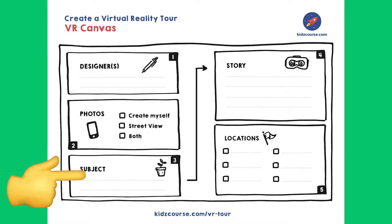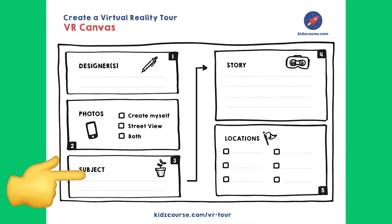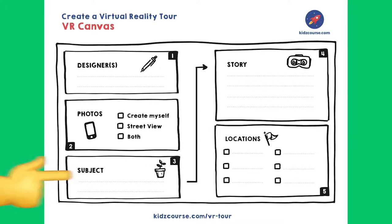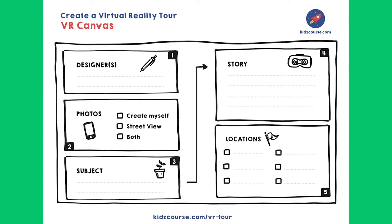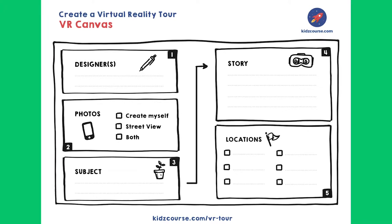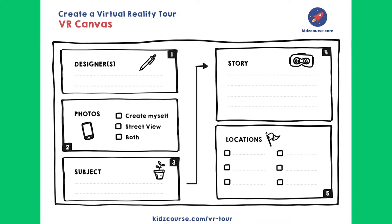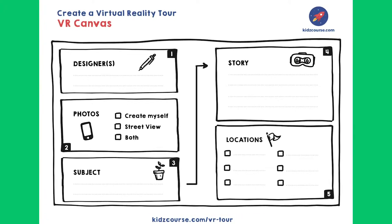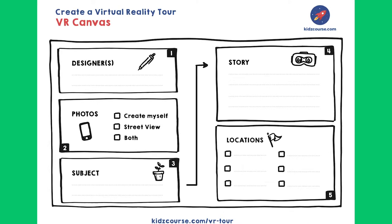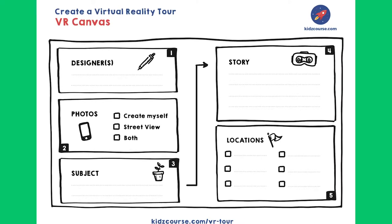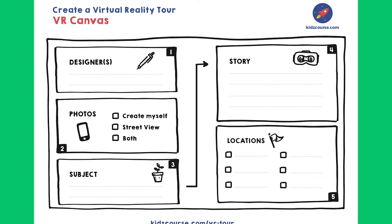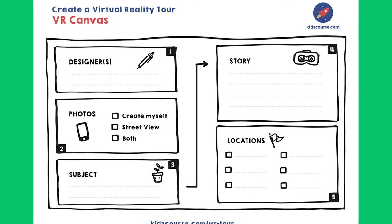My school, my city, my vacation — but it can also be the Romans. Boxes two and three have to do with each other, of course. If you chose 'my school,' then you will have to take the pictures yourself — there will probably be no pictures of your schoolyard on Streetview. If you choose 'my city,' then you can probably take most pictures from Streetview.